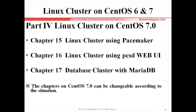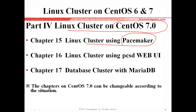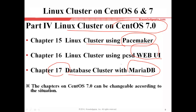Part four will be Linux Cluster on CentOS 7.0 with three chapters. This includes cluster using Pacemaker and cluster using PCSD, which is a web user interface similar to Conga on CentOS 6.5. Chapter seventeen covers database cluster with MariaDB instead of MySQL. If you install CentOS 7.0, the default database system will be MariaDB, not MySQL. In this chapter, I will introduce how to set up MariaDB for database clustering service.